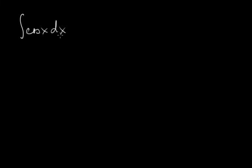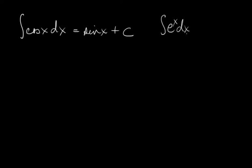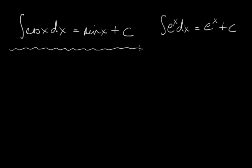Some antiderivatives are very easy to find because you know your derivatives. For example, the integral of cosine(x)dx is sine(x) plus a constant because the derivative of sine(x) is cosine(x). Or another very simple one: the integral of e^x dx is e^x plus a constant because the derivative of e^x is e^x.